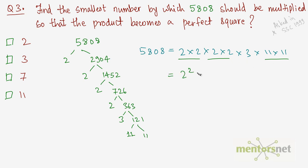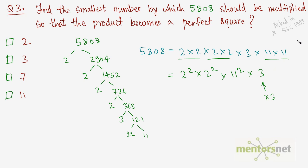Taking the square root of 5808, we find 2², 2², and 11² are perfect squares, but 3 is not paired. To make 5808 a perfect square, we multiply by 3, giving 3² which is a perfect square. So the answer is 3.